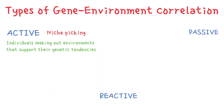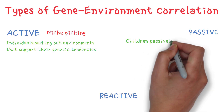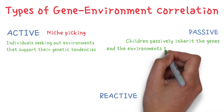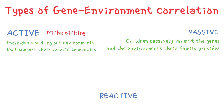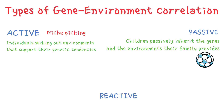Passive genotype-environment correlation occurs when children passively inherit the genes and environments their family provides. For example, let's take a very athletic family — the dad plays football and the mom plays hockey. The children in this case would have inherited both the genes and the environment that encourages them to engage in sports.